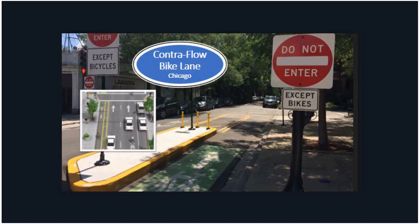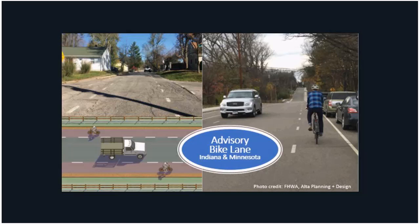Advisory bike lanes are something being seen more frequently. There's an example in Chicago on Milwaukee Avenue. The car lane is normally about 18 feet wide, so if two cars are approaching each other, they can temporarily move into the bike lane area to pass each other. I don't know of any examples in the Chicagoland suburbs, but there are examples in Indiana and Minnesota where there isn't enough room for a dedicated bike lane but you can put in this dashed advisory bike lane.